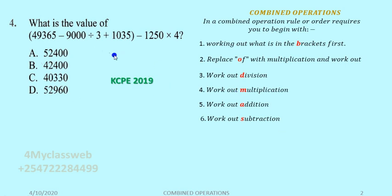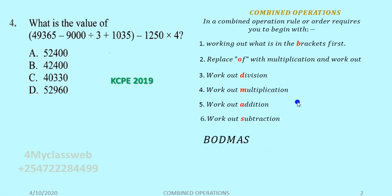In some cases you may find a problem that has one of the operations missing. In this case, 'of' is not there, but according to the rule it is the second step after the bracket. So here we deal with the bracket first, then because we don't have 'of', we move to division. After division, we do addition, and then subtraction. This rule gives us an acronym we can remember: BODMAS — Bracket, Of, Division, Multiplication, Addition, and Subtraction.